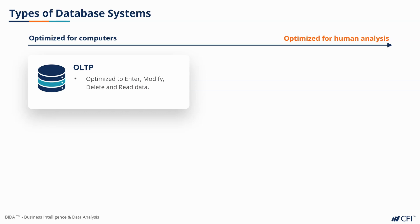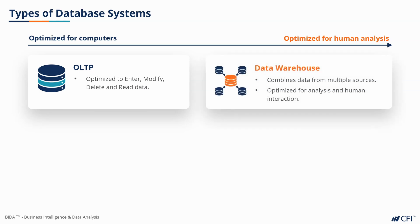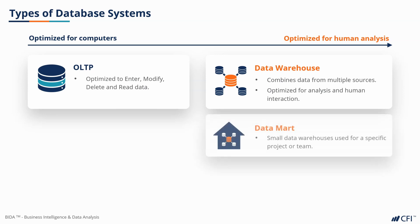That's the type of database you'd be interacting with if you logged into your online banking — you want to enter transactions or see a list of your transactions. At the other end of the spectrum, we have a data warehouse, which combines data from multiple sources and is optimized for analysis. Instead of asking what your latest 10 transactions are, you now want to know by what percentage your monthly outgoings have increased compared to the same period last year — that's a very different kind of question. A data mart is simply a small data warehouse used for a specific project or team.